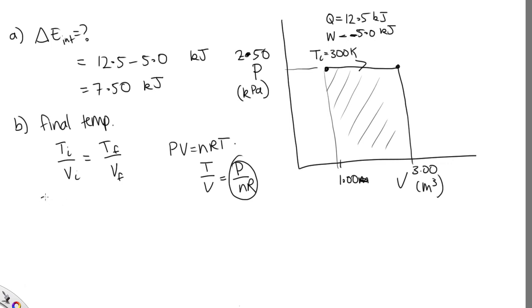So substituting in, we've got 300 over 1 is equal to Tf over the final volume, which is 3. So that tells us Tf is equal to 3 times 300, which gives us 900 kelvins.